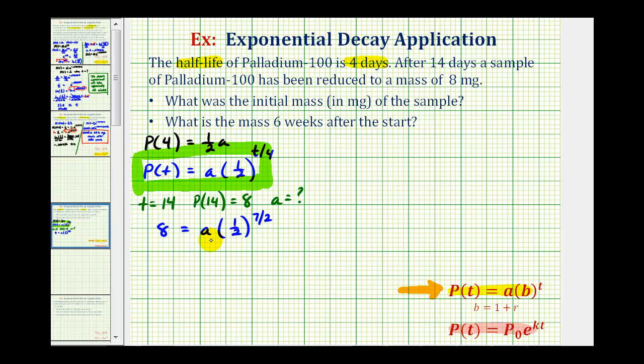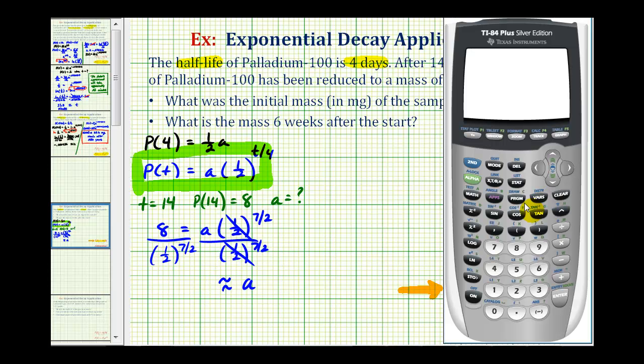To solve this for a, we just need to divide both sides by one-half raised to the seven-halves power. Notice on the right side, this simplifies to one, so we're left with a. And now we can go to the calculator to determine this approximate value. So we have eight divided by one-half raised to the power of seven-halves. So the initial amount was approximately 90.5 milligrams.